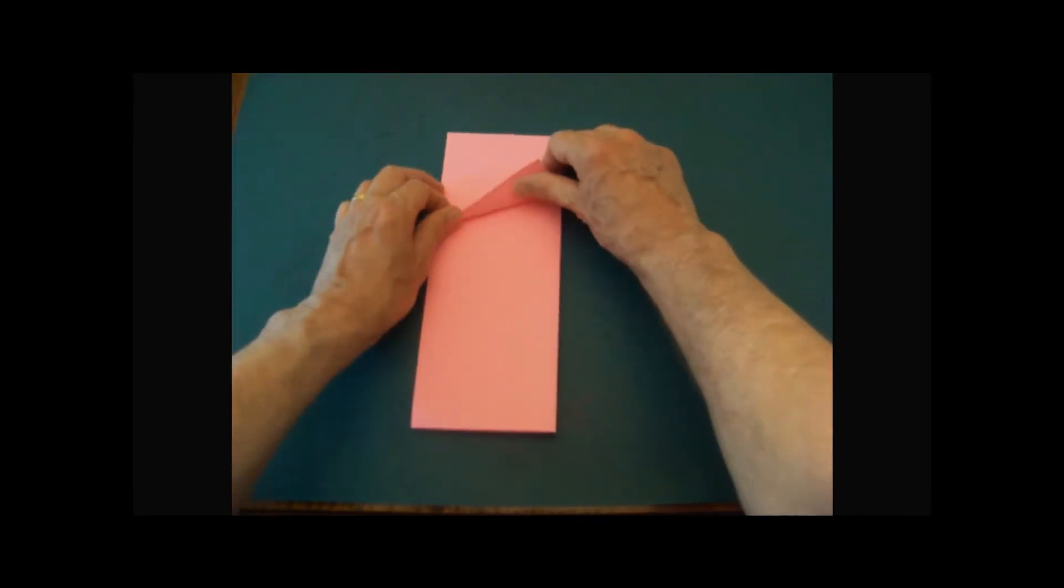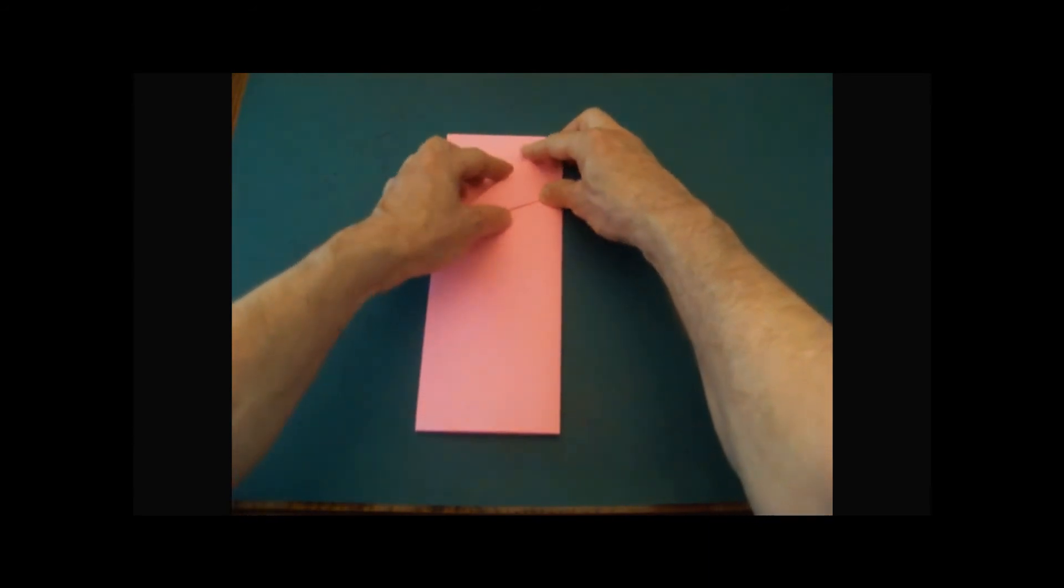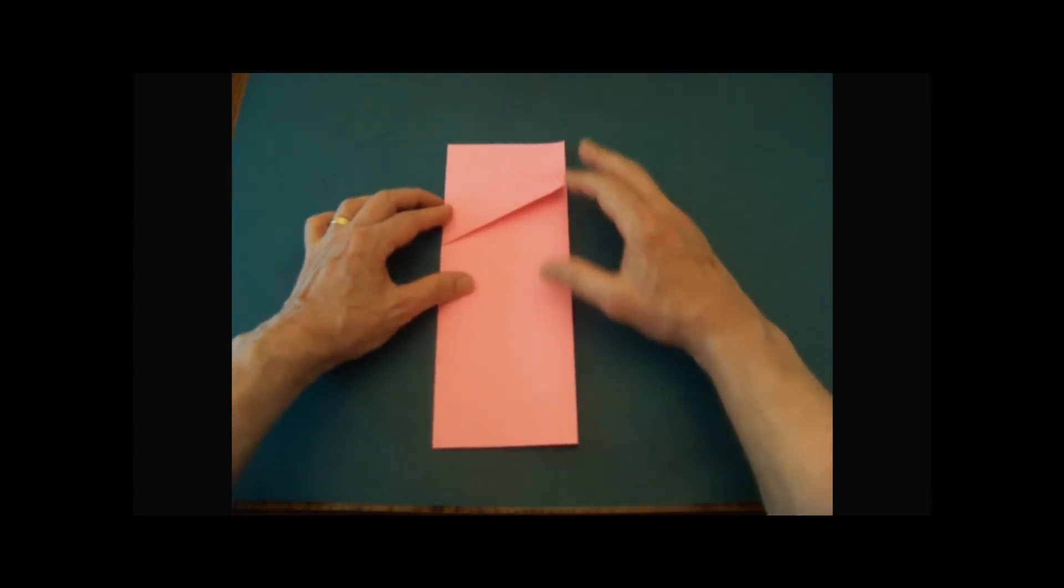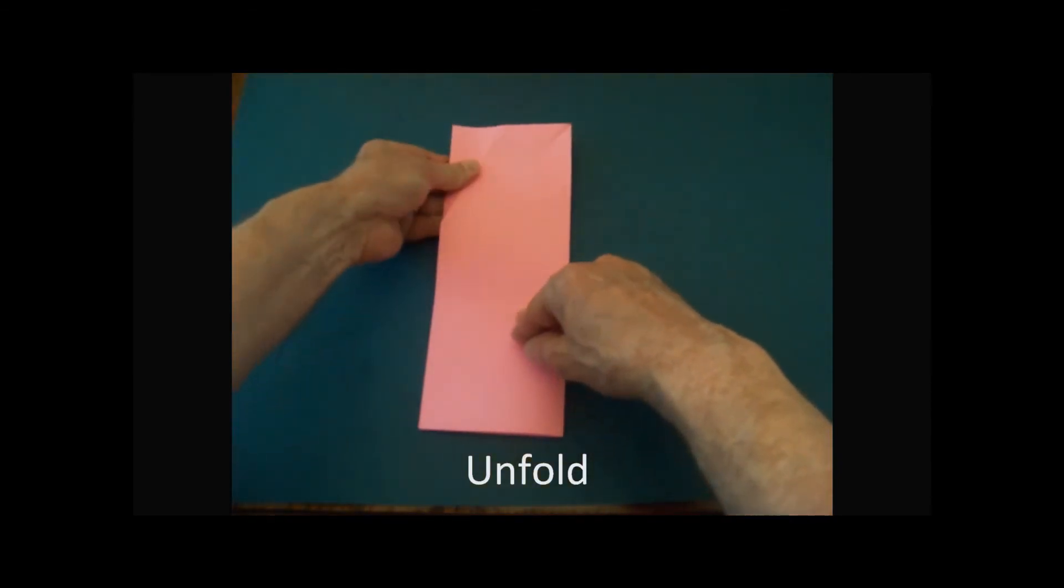Fold the bottom edge of the triangle flap back to meet the folded diagonal edge. Unfold the paper completely.